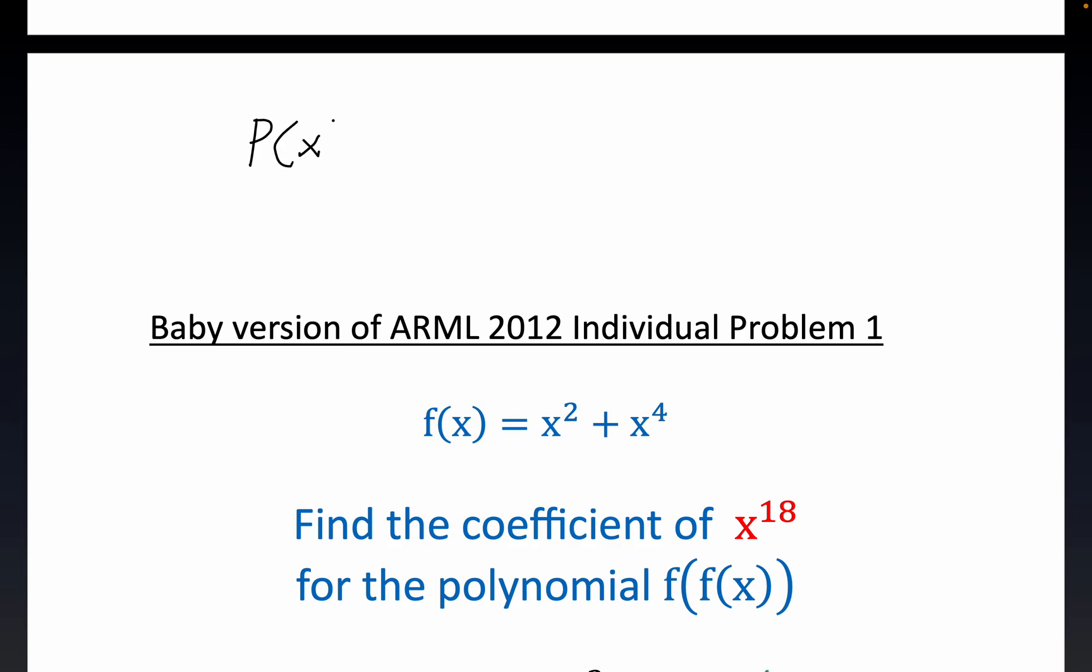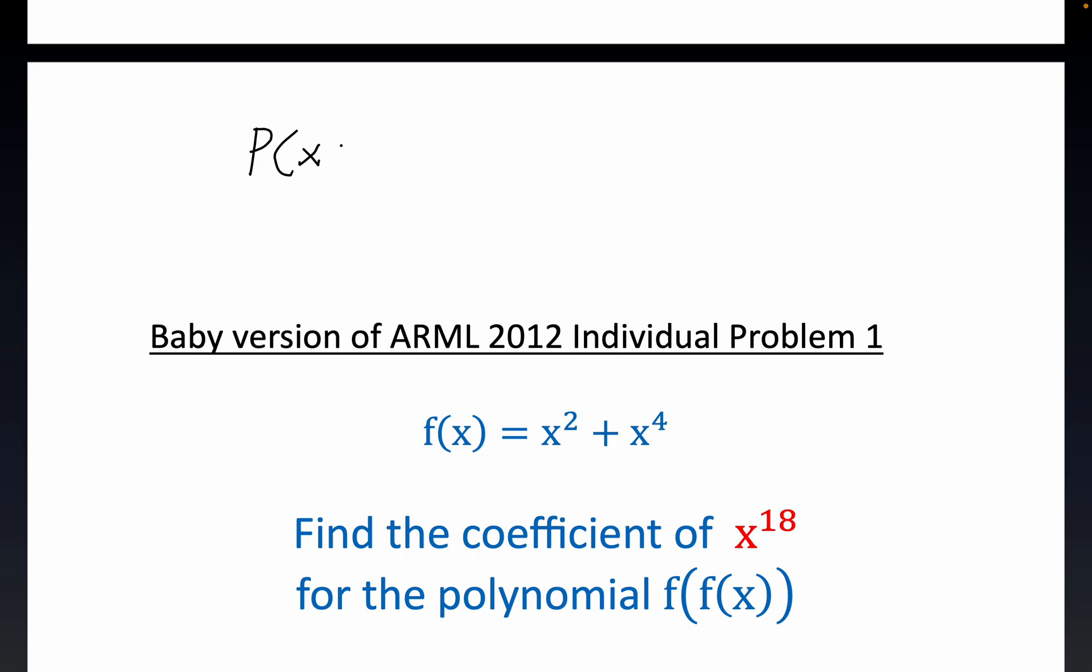If you have a polynomial, we'll call it p of x, and I'm just making up one right here. Let's say we have p of x is equal to whatever, 4x squared plus some other stuff. Let's say the very last term is 7x to the 18th power.